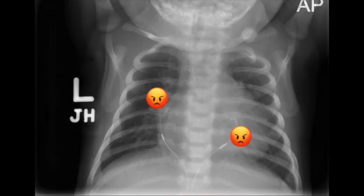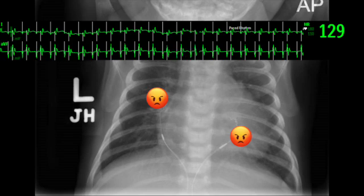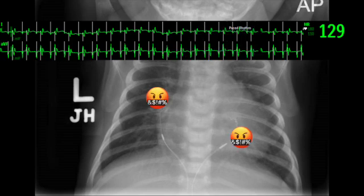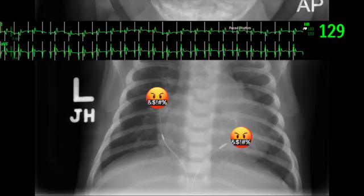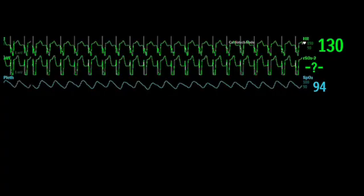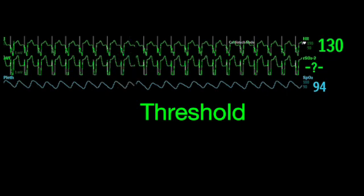We obviously don't want non-capture, so why don't we just turn the pacemaker to its highest setting? Temporary pacing wires degrade over time due to inflammation and fibrosis around the wires, especially if the patient is continuously pacing. Theoretically, the higher the current delivered through the wires, the faster they will go bad — so we don't start at the highest output.